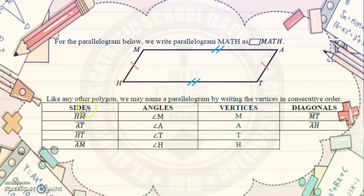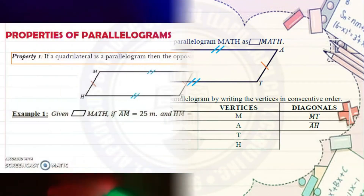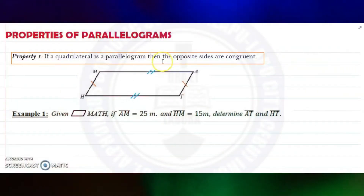For the sides, you can see: HM, AT, HT, and MA. For the diagonals — a diagonal is a line connecting the two opposite vertices — so the diagonals are MT and AH. Now let us discuss the properties of parallelograms.